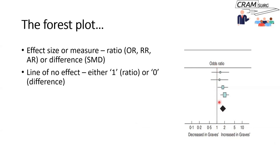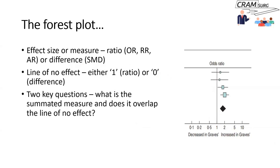The effect size doesn't necessarily have to be an odds ratio — it could be any ratio such as relative risk, or sometimes simply a difference like the mean difference in hospital stay. The line of no effect is usually at one if it's a ratio, which means there's no difference between the groups. But if it is a difference, then the line of no effect should be at zero.